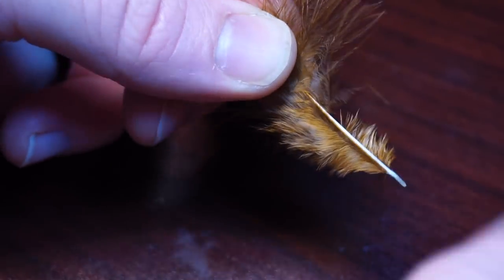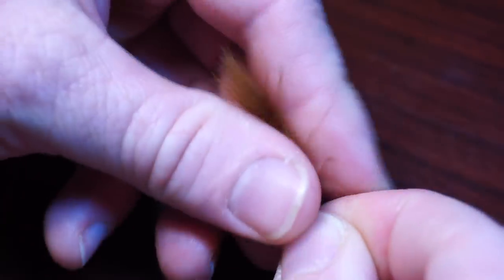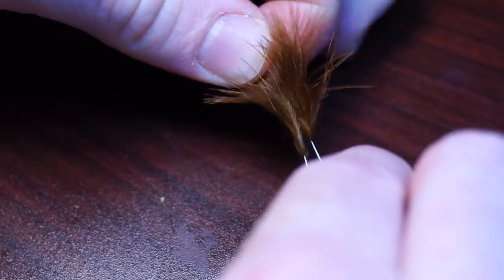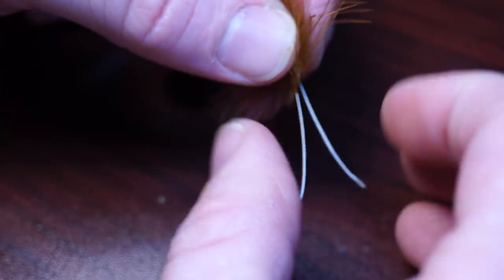Strip off the fibers at the stiff part of the feather. You can see where the color and thickness of the feather stem changes. Place these feathers back to back so the curve of the feather angles outward, and the tips align, like so.